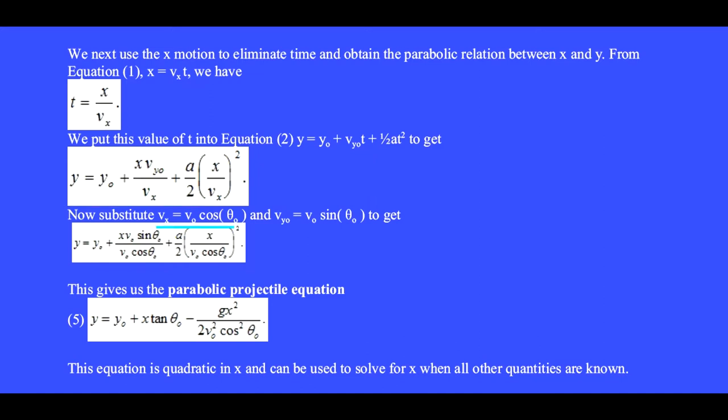Now substitute vₓ equals v₀ cosine θ₀ in these two spots and v_{y0} equals v₀ sine θ₀ to get this equation. But this sine over cosine is a tan and the two v₀'s cancel. We set a equal to minus g and get the parabolic equation y equals y₀ plus x tan θ₀ minus gx squared over 2v₀ squared cosine squared θ₀. This equation is quadratic in x and can be used to solve for x when all other quantities are known.